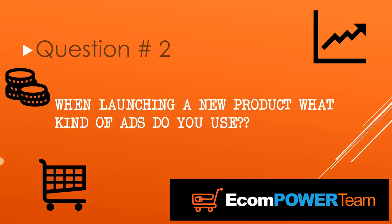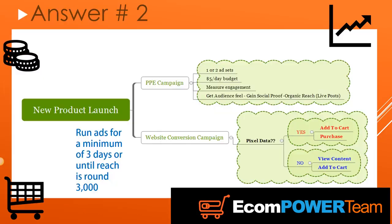Question number two: when launching a new product, what kind of ads do you use? This is another frequently asked question that a lot of people seem stuck on. Here's my breakdown of what I like to do when I launch a new product. I like to run two different types of campaigns right off the bat. One is going to be a page post engagement campaign, also known as PPE — Facebook is going to show your ad to the people that are most likely to engage, like, comment, and share your post.